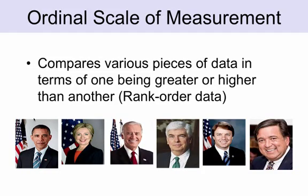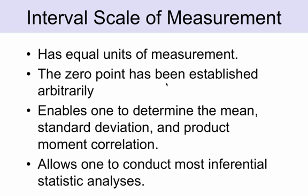Let's consider the ordinal scale of measurement. Ordinal means the order of things, or a ranking — we compare data in terms of one being greater or higher than another. Here are some of the presidential contenders in the 2008 Democratic presidential race. If I give you a survey asking you to rank the candidates in your order of preference, I could put them in order, but it doesn't mean that my first-place person is twice as preferred as the second place. The only thing that matters is the order of the data.